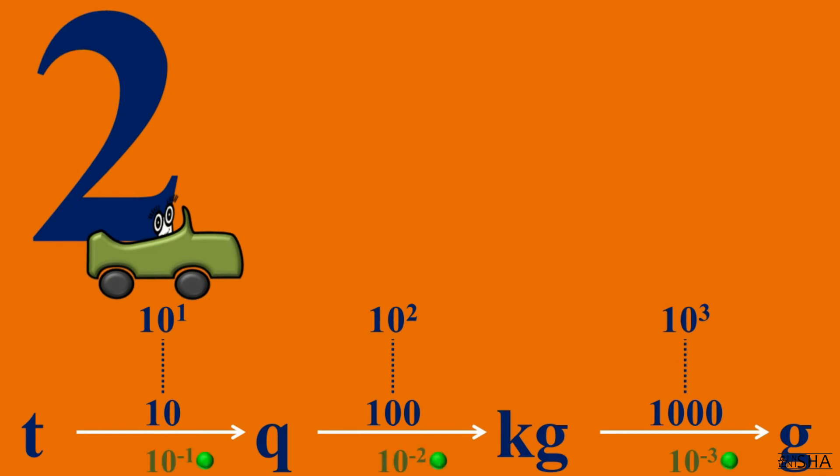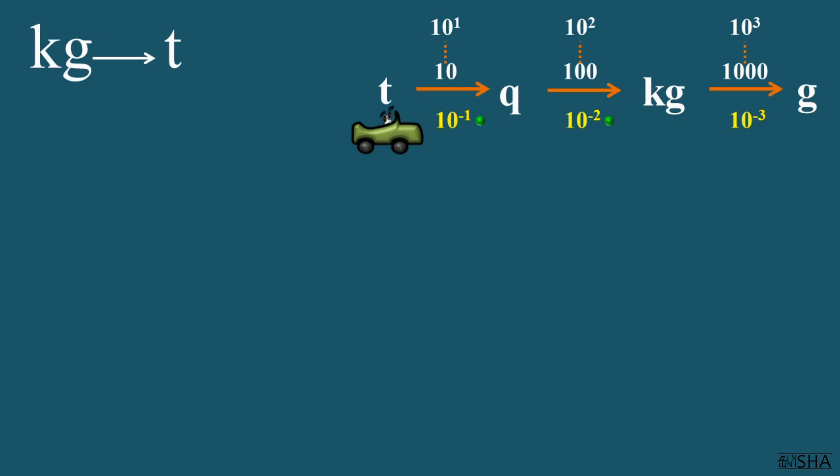Here are some examples. Convert 320 kilograms to tons. 320 should be multiplied by 10 to the negative third power. This is already an answer but you can also write it down like this: 0.32 of a ton.